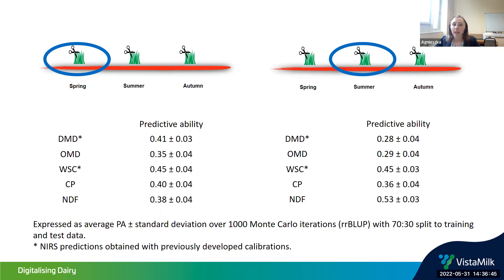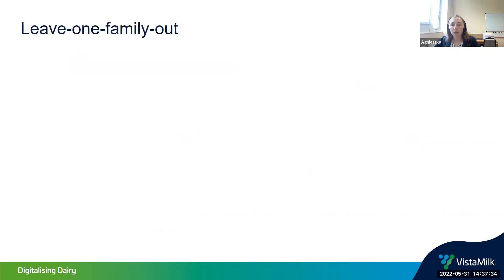For the summer cut we have quite high predictive ability for NDF, which makes sense because plants in summer will have probably higher production of NDF at a slightly different developmental stage. However, Monte Carlo cross-validation allows close relatives to appear in both training and test sets. A stricter approach is leave-one-family-out cross-validation, where all related individuals from one family are kept for validation and the model is built on the rest of the training population.